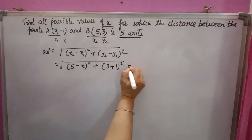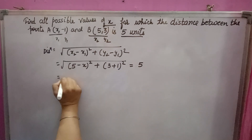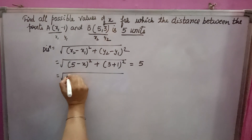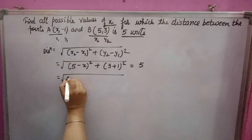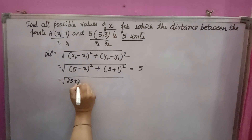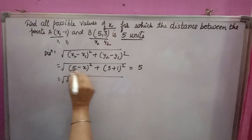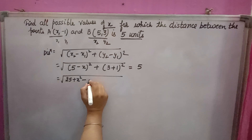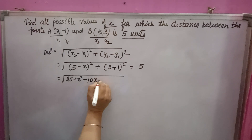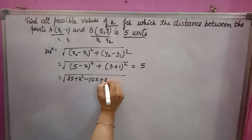This distance is equal to 5. So under root of (5 minus x) whole square equals 5 squared. Expanding: x squared minus 10x plus 25, and (3 plus 1) squared gives 4. So x squared minus 10x plus 4.